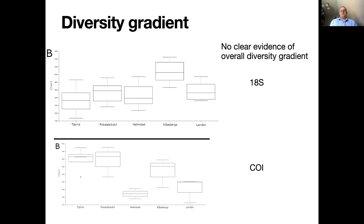We had the question of whether we could find a diversity gradient going from north to south — north is on the left in this diagram, southeasternmost to the right. The answer is probably that there wasn't really any clear gradient that we could detect here. It looks a little bit contradictory also between the 18S and CO1 data, but that's probably just random variation. With only five sites in this snapshot of diversity, we were not able to find an overall diversity gradient in our sequences.